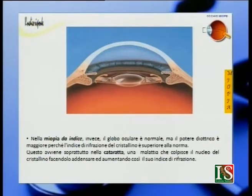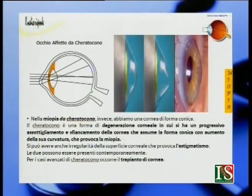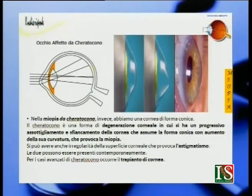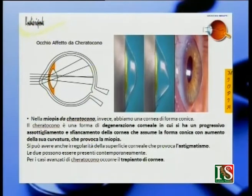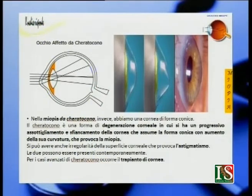Un'altra miopia è quella da cheratocono, che riguarda la cornea. La cornea assume la forma conica. Il cheratocono è una degenerazione corneale in cui si ha un progressivo assottigliamento e appiancamento della cornea con aumento della sua curvatura. Si può avere anche irregolarità della superficie corneale che provoca l'astigmatismo. Per i casi avanzati di cheratocono è necessario il trapianto di cornea.